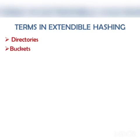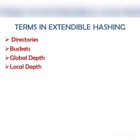Next is buckets — they store the hashed keys and directories point to the buckets. A bucket may contain more than one pointer to it if its local depth is less than the global depth. Next is global depth, which is associated with the directories and denotes the number of bits used by the hash function; global depth equals the number of bits in the directory ID. Local depth is the same as global depth except it is associated with buckets, not directories. Local depth in relation to global depth is used to decide the action to be performed in case an overflow occurs. Local depth is always less than or equal to the global depth.